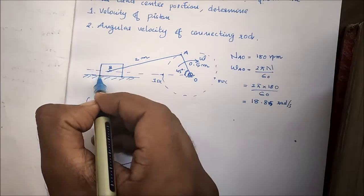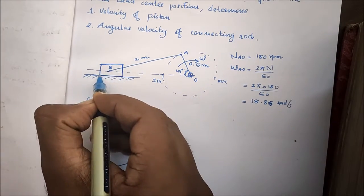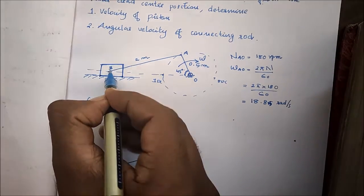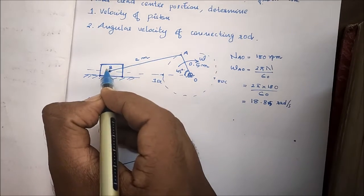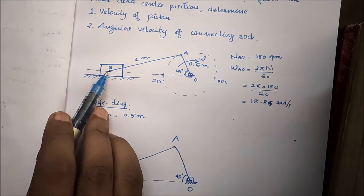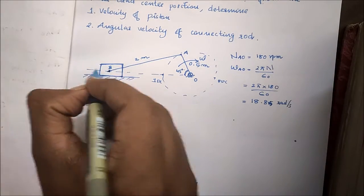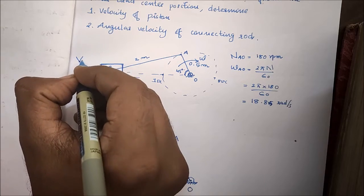This is the slider. What is B? The velocity of the slider — we need to find the velocity of the slider.